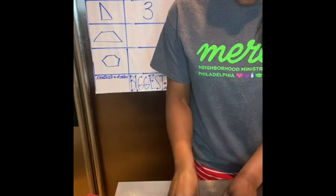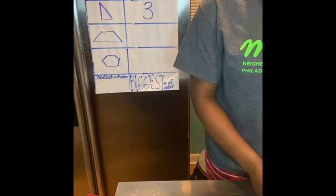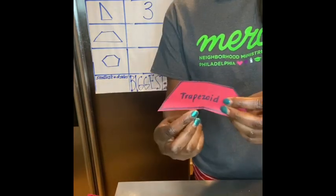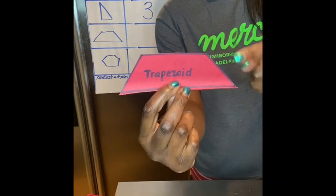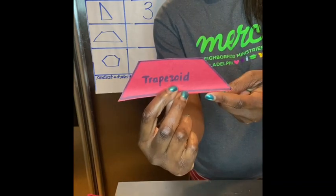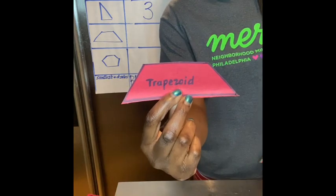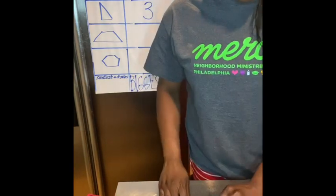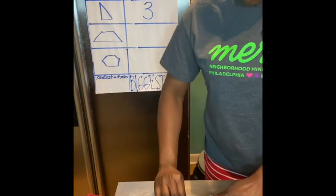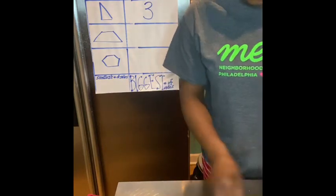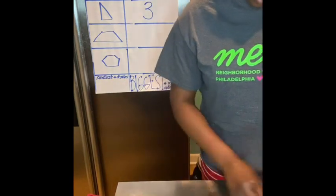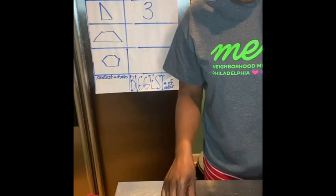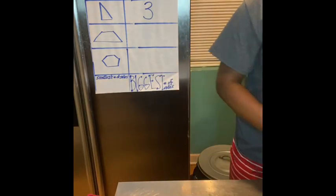Let's do our next shape — the trapezoid. Small at the top, long at the bottom, two arms that meet. It's a trapezoid. One, two, three, four. The trapezoid has four sides. Four is a popular number!